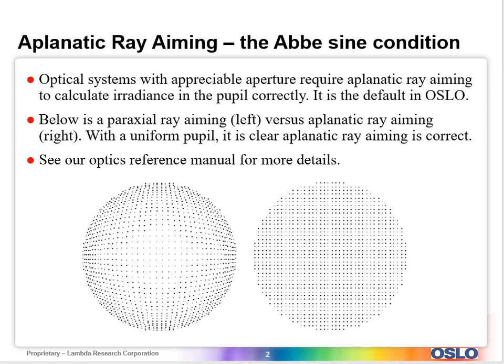Essentially these systems require aplanatic ray aiming in order to calculate radiance correctly in the pupil. In the default mode in Oslo, the pupil is assumed to be illuminated uniformly by whatever light is coming from the object and what you're trying to see.